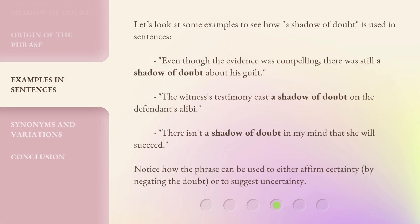Let's look at some examples to see how a shadow of doubt is used in sentences. Even though the evidence was compelling, there was still a shadow of doubt about his guilt. The witness's testimony cast a shadow of doubt on the defendant's alibi. There isn't a shadow of doubt in my mind that she will succeed. Notice how the phrase can be used to either affirm certainty, by negating the doubt, or to suggest uncertainty.